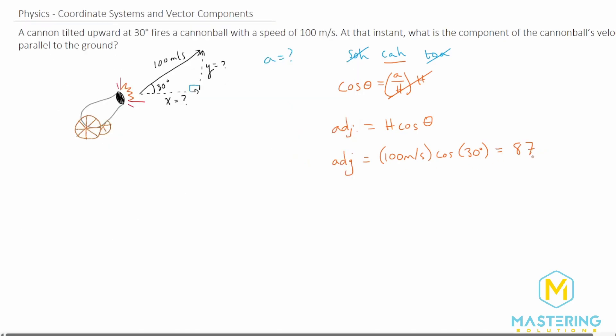So 87 in this case is the x component for the 100 meter per second cannonball vector.